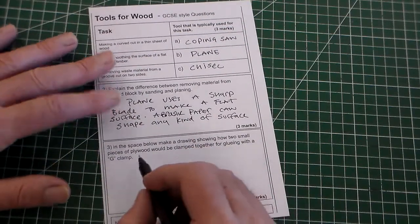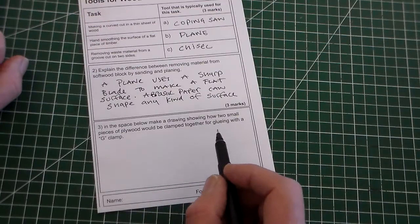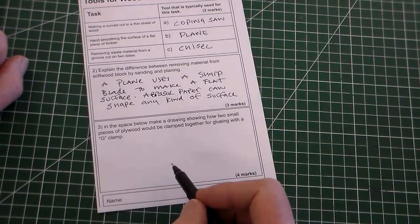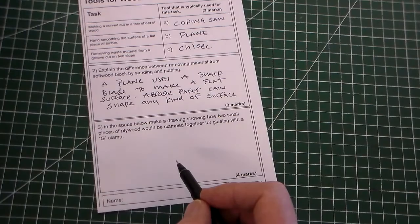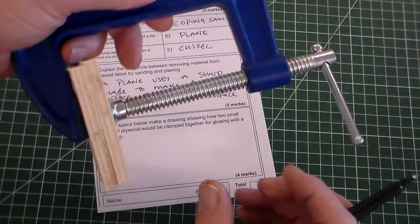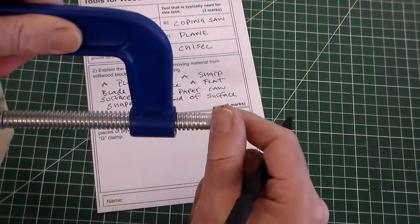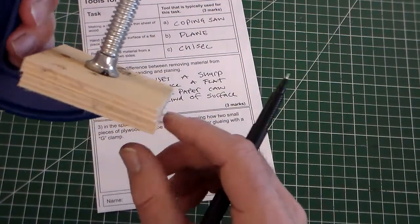Last of all, in the space below, make a drawing showing how two pieces of plywood would be clamped together for gluing with a G-clamp. So basically, if we look here we've got a G-clamp and the two pieces of plywood. We'd just twist this to clamp them up. The glue would be in between.